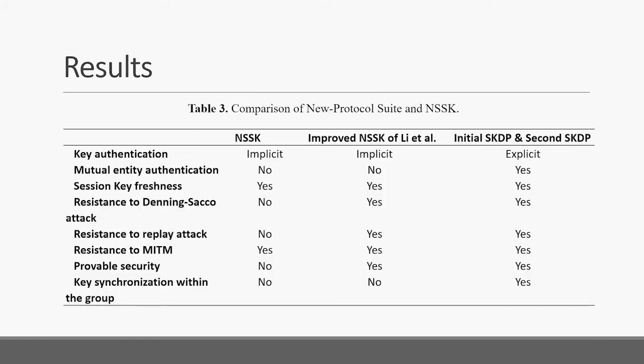Finally, we give a chart showing the comparison of our new protocol suite with the original NSSK. Our new protocol is the rightmost column in the chart. Compared with other schemes, there are some benefits in our scheme: our scheme can resist many kinds of attacks; our scheme has explicit key authentication and supports mutual entity authentication; our scheme's security is provable and considers key synchronization within the group. So our scheme has better features than the original NSSK and improved schemes of others.